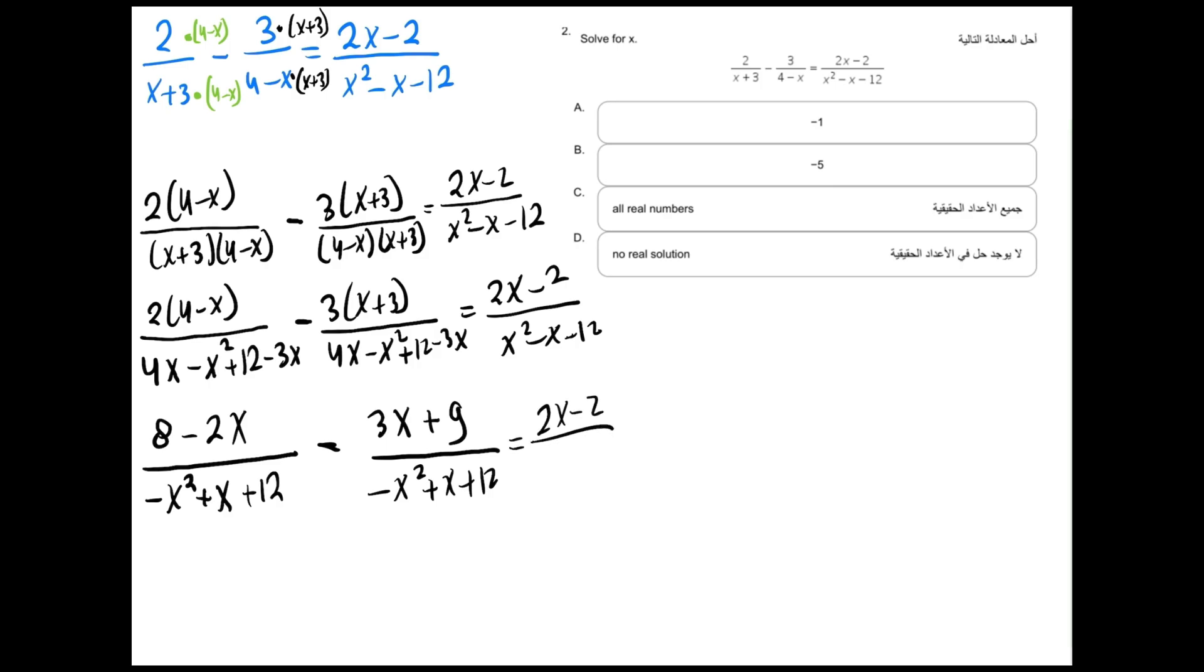Minus 3x plus 9 over minus x squared plus x plus 12 equals to 2x minus 2 over x squared minus x minus 12. Now let's collect the fractions together just to make sure we are being systematic. So we have 8 minus 2x. Don't forget about this minus sign. It has to change the sign for these two. Minus 3x minus 9 over minus x squared plus x plus 12 equals to 2x minus 2 over x squared minus x minus 12.